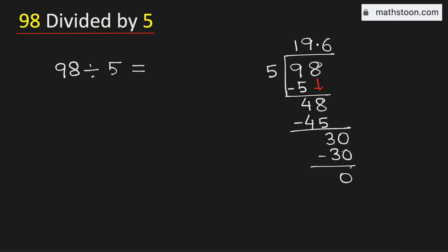As we have got the number 0 and there is no number to bring down here, so we will stop. Therefore, 98 divided by 5 is equal to 19.6, and this is our final answer.